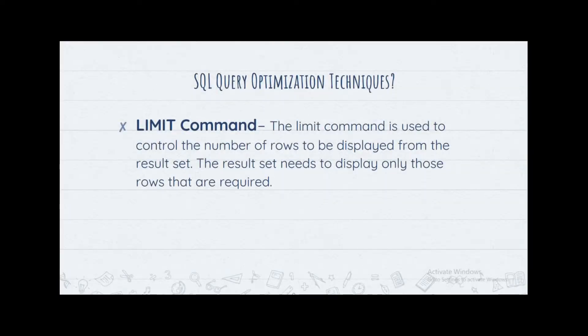The LIMIT command is used to control the number of rows you want to display. Rather than displaying all the data, you can use LIMIT — for example, LIMIT 10 or LIMIT 100. Instead of returning all records, you display only what you need, such as 100 or 1,000 rows out of a million records.